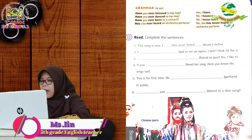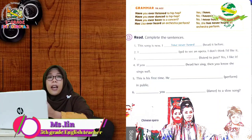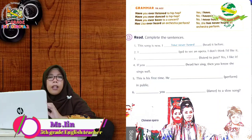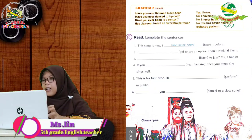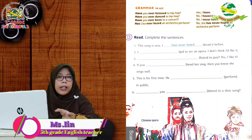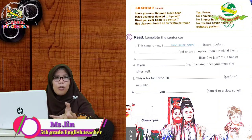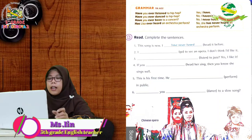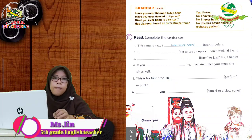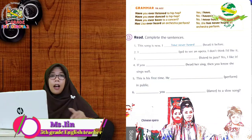The first example: 'Have you ever listened to hip-hop?' — Apakah kamu pernah mendengarkan musik hip-hop? If yes, the short answer is 'Yes, I have.' For a complete answer: 'Yes, I have. I have ever listened to hip-hop.' In English, a complete answer is preferred — apa yang ditanyakan dalam pertanyaan bisa diungkapkan kembali untuk jawaban yang lebih complete.